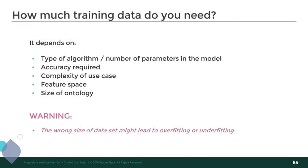At the end of the day, how much training data do you need? Unfortunately, this is a question that's really difficult to answer even for someone who has worked with machine learning for many years, because it depends on the type of algorithm you're using, the number of parameters in your model, the accuracy you actually need, your feature space and how your data is distributed, the size of the ontology, and the number of classes you're considering. The biggest thing to remember is that the wrong size of data will automatically lead you to either overfitting or underfitting, which is why active learning is a very good option to dynamically choose not only the rows that go in your training set, but also the size of your dataset.